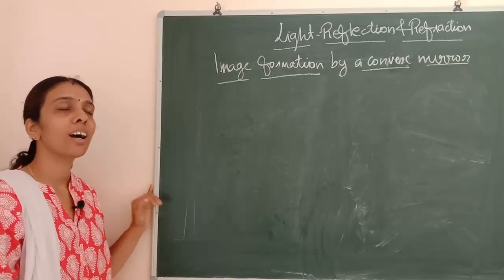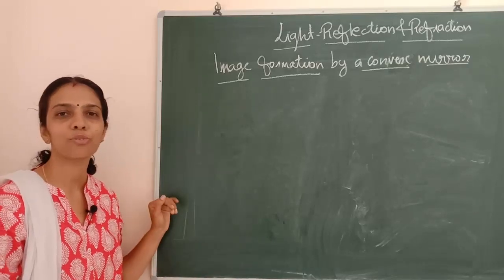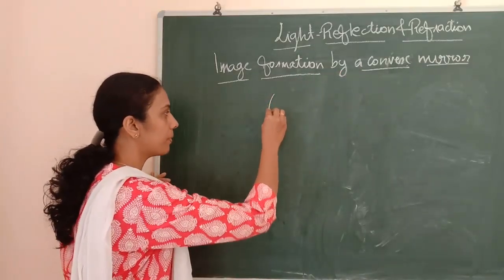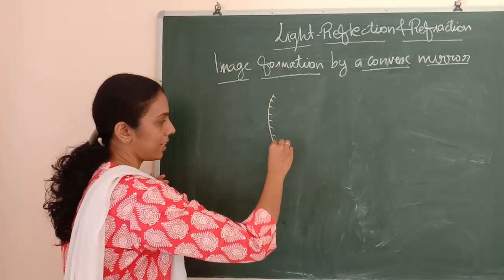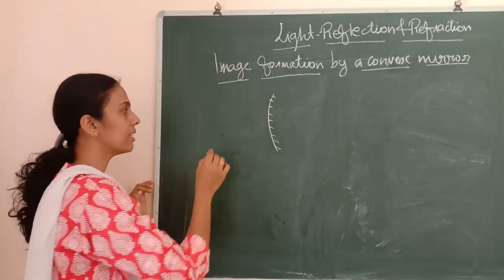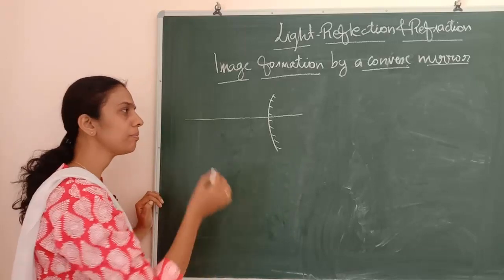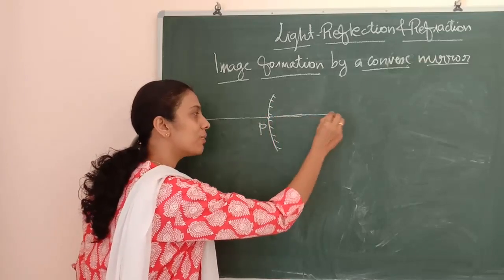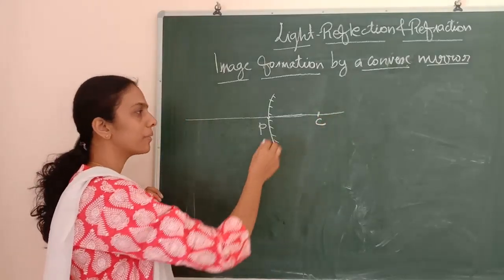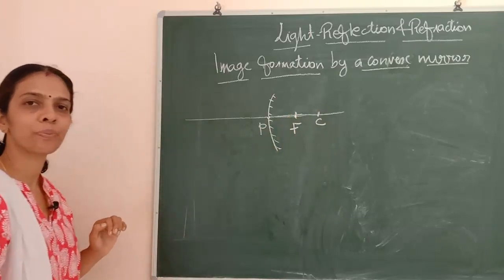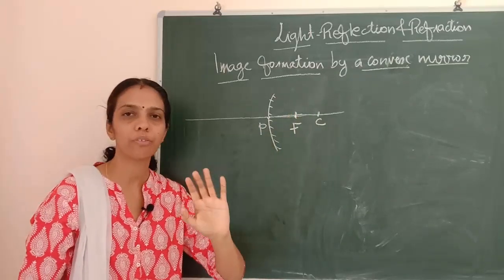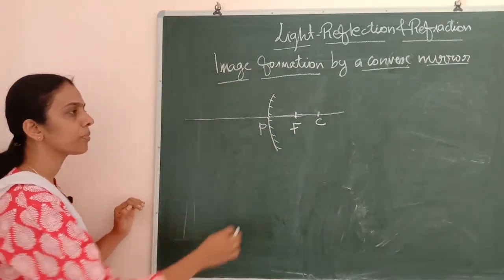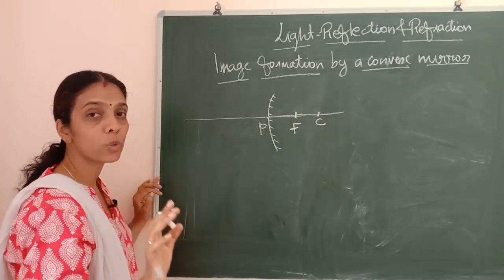So how will the image be forming, and where will the reflected ray be meeting — all those things we are going to find out now. Here is a convex mirror. Convex mirror means it will be bulged outwards. This is the principal axis, the pole is over here, and then the center of curvature is here, and the principal focus will also be here. Here also R equals 2F — that formula will be obeyed. PF and FC distances should be the same.